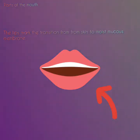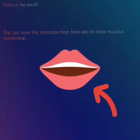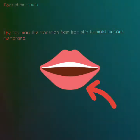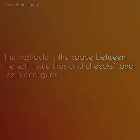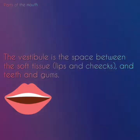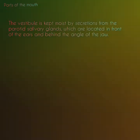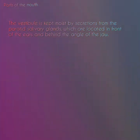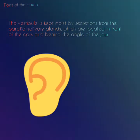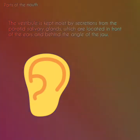The lips mark the transition from skin to moist mucous membrane. The vestibule is the space between the soft tissue, lips and cheeks, and teeth and gums. The vestibule is kept moist by secretions from the parotid salivary glands, which are located in front of the ears and behind the angle of the jaw.